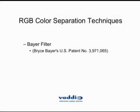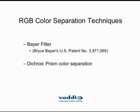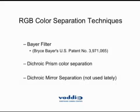The Bayer filter is the most popularly used in a single imager. Then we have dichroic prism color separation, where light passes through a prism and separates into the three basic colors. And the one that's not used anymore, but was used for a long time, is the dichroic mirror, where mirrors reflect red, green, and blue in different intensities, so that we can use those three basic colors to obtain all colors in the spectrum.